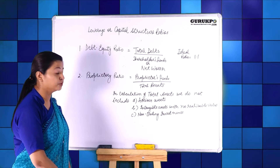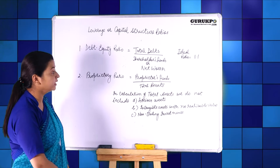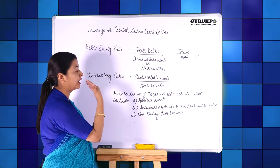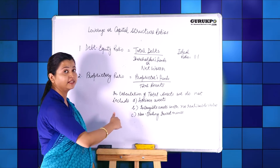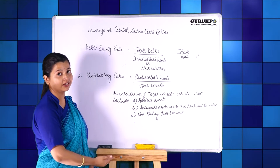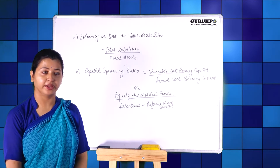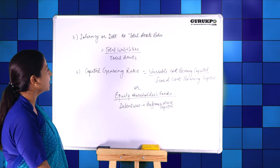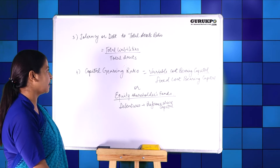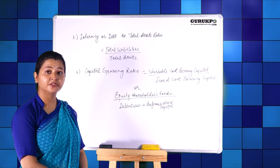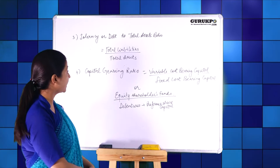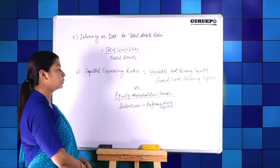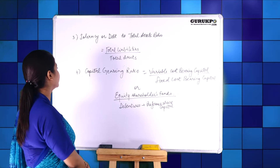The proprietary ratio is calculated to know to what extent proprietors' or shareholders' funds are invested in financing the total assets of the company. The next ratio is the solvency or debt to total asset ratio. Its formula is total liabilities divided by total assets, and it determines to what extent total assets are being financed from total loans.